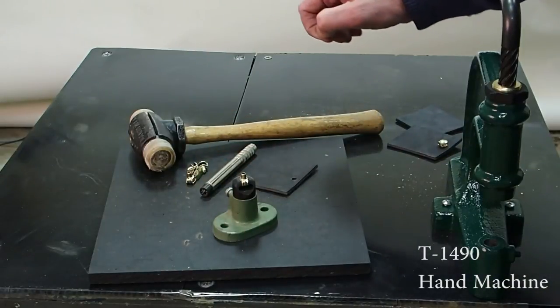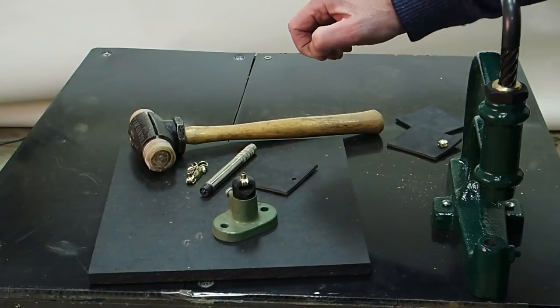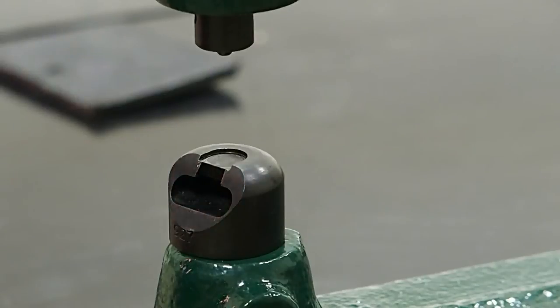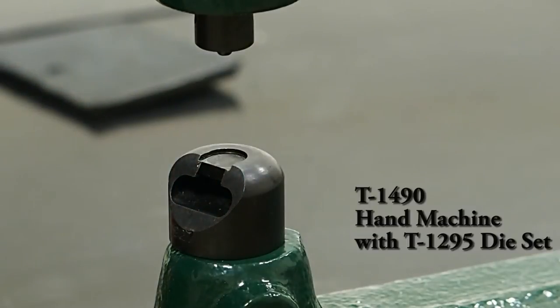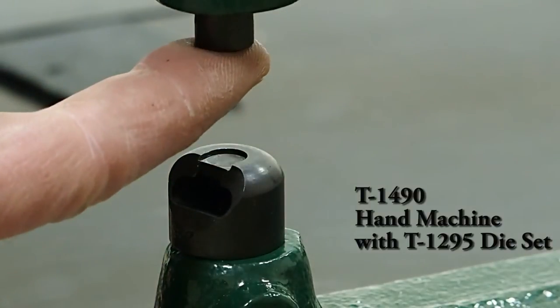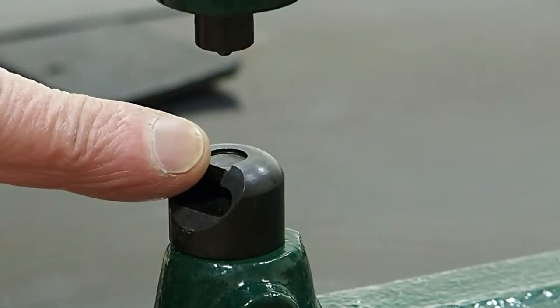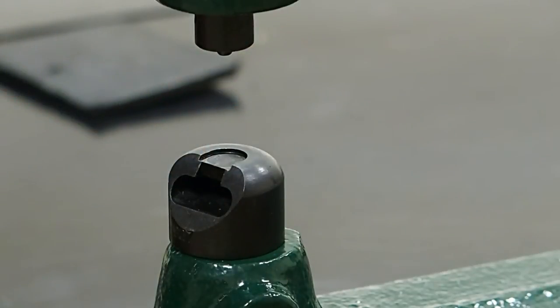The second method I'm going to show you today is using a machine. Here's your machine. Top die gets screwed into the top. Bottom die goes into the bottom of the machine.